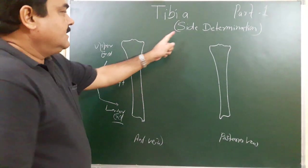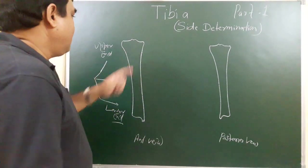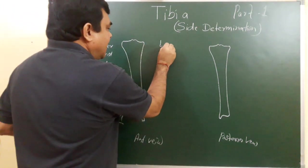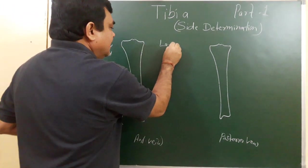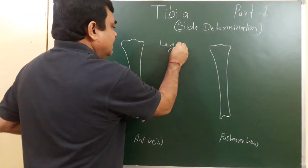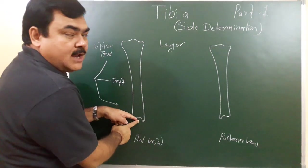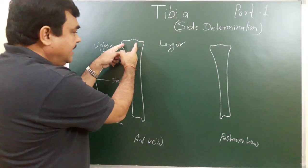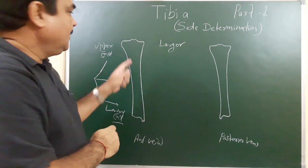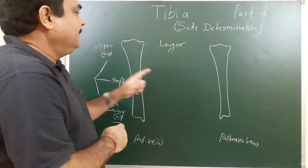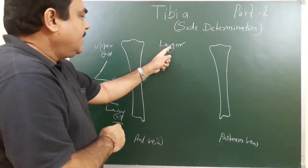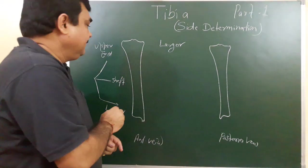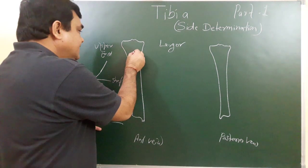For side determination, you can see that the upper end is larger than the lower end — it is expanded and forms two condyles. So the upper end is larger in comparison to the lower end.